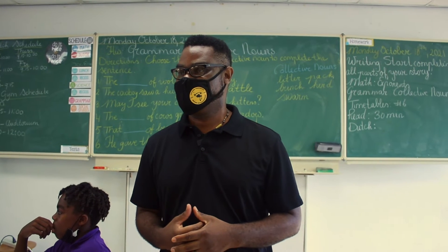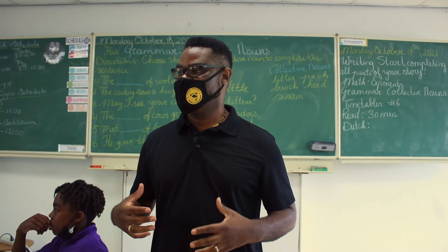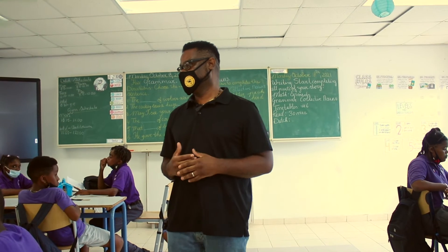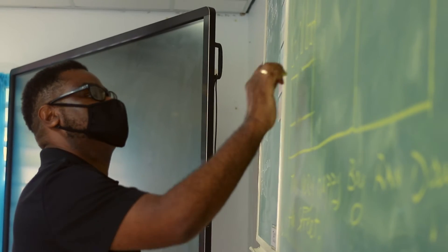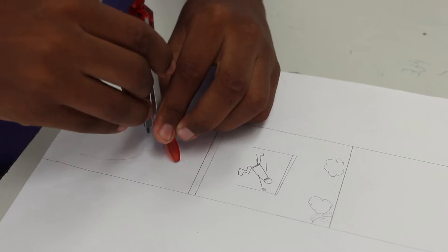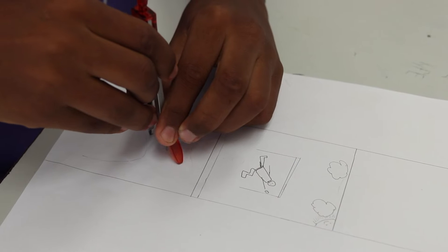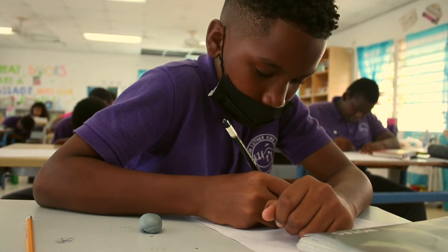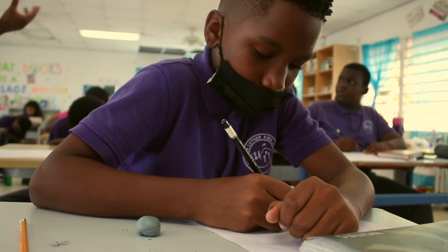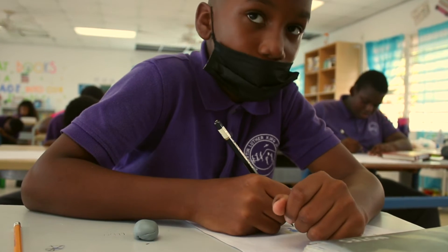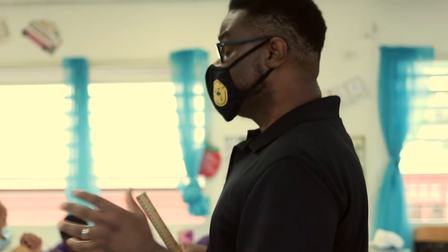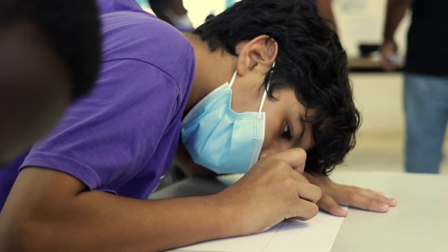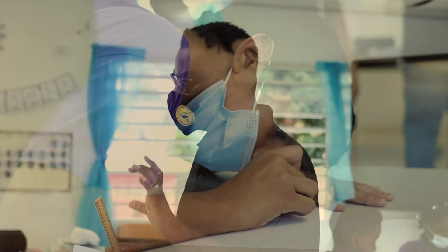Today we're going to start doing some thumbnail sketches with the first part of your story. You're going to be doing thumbnail sketches based on what you've written — the first five lines of your story.